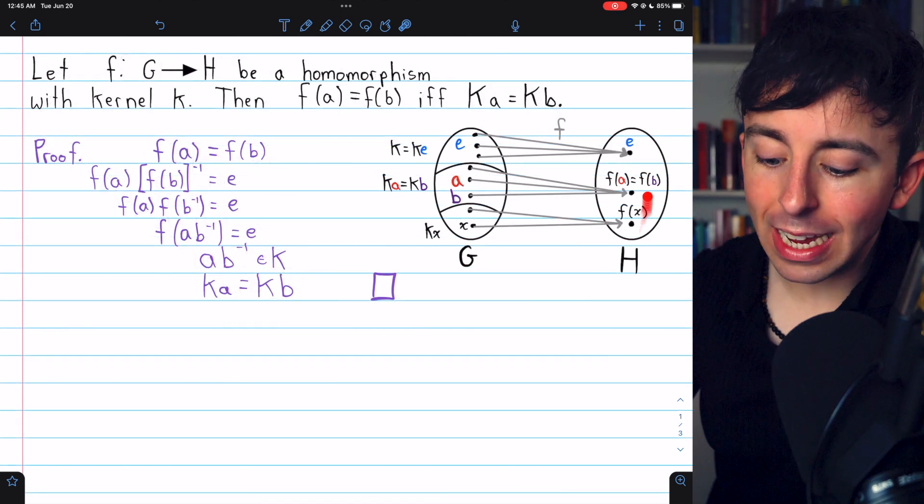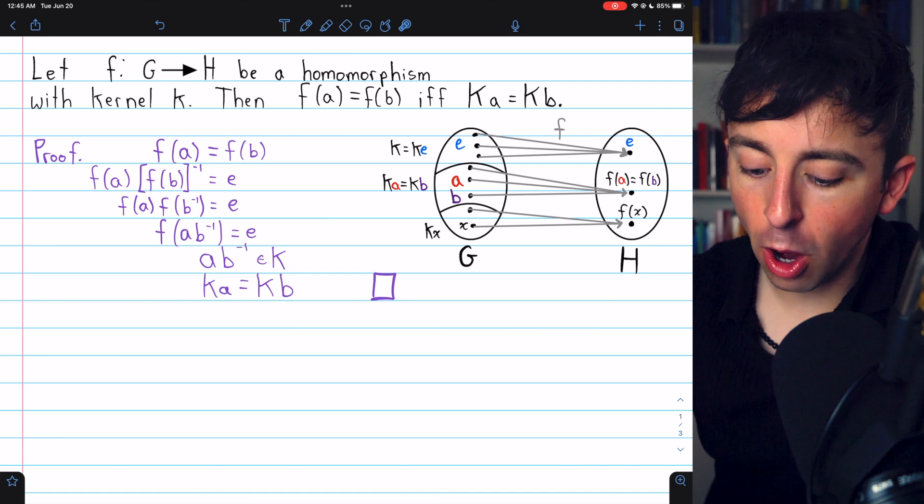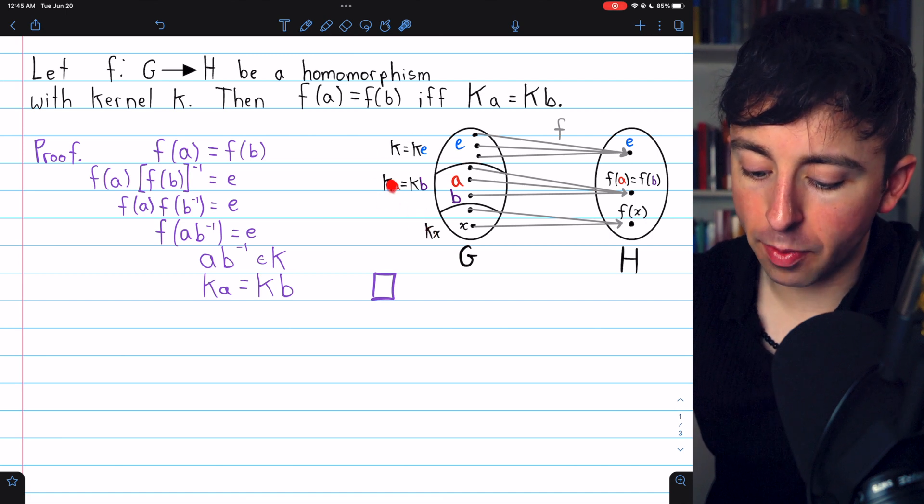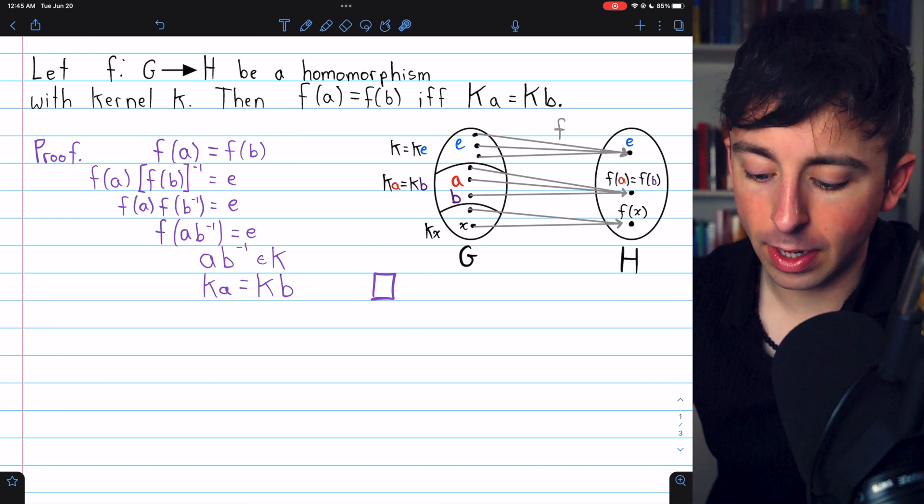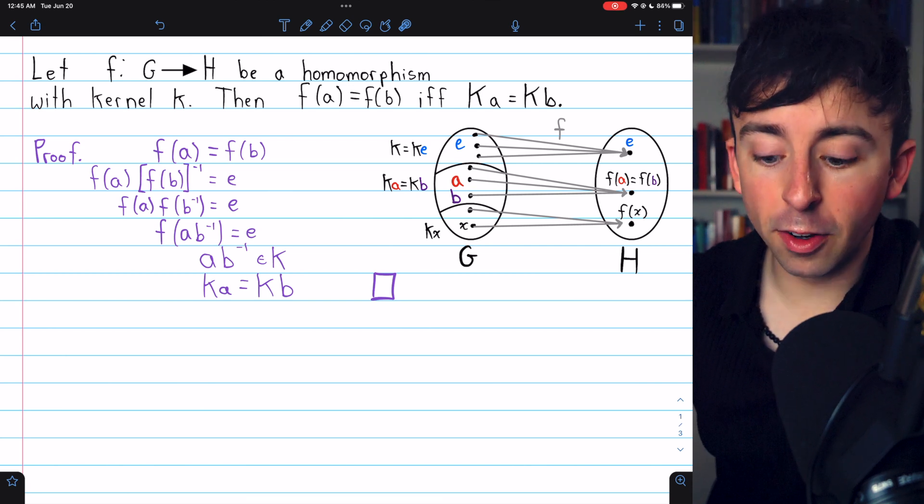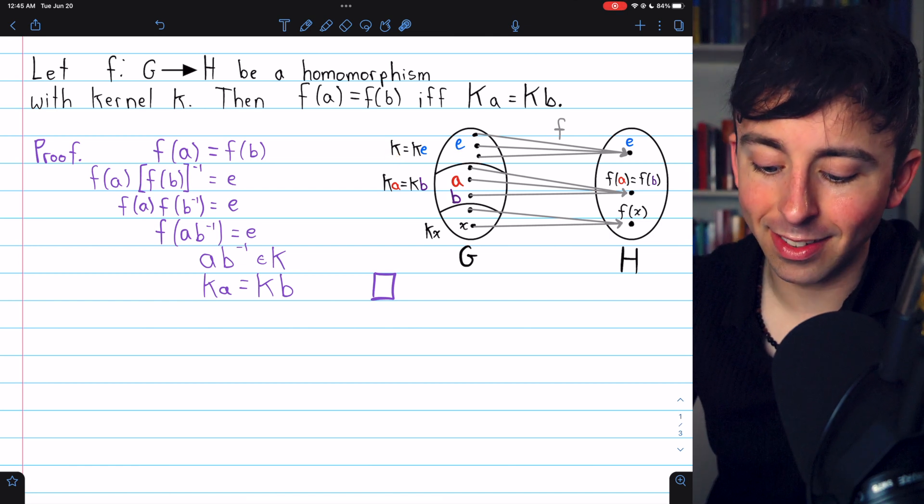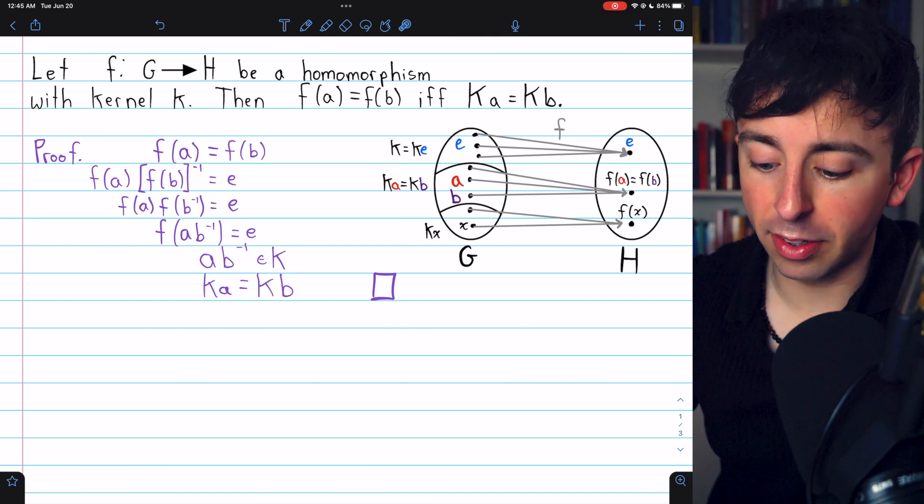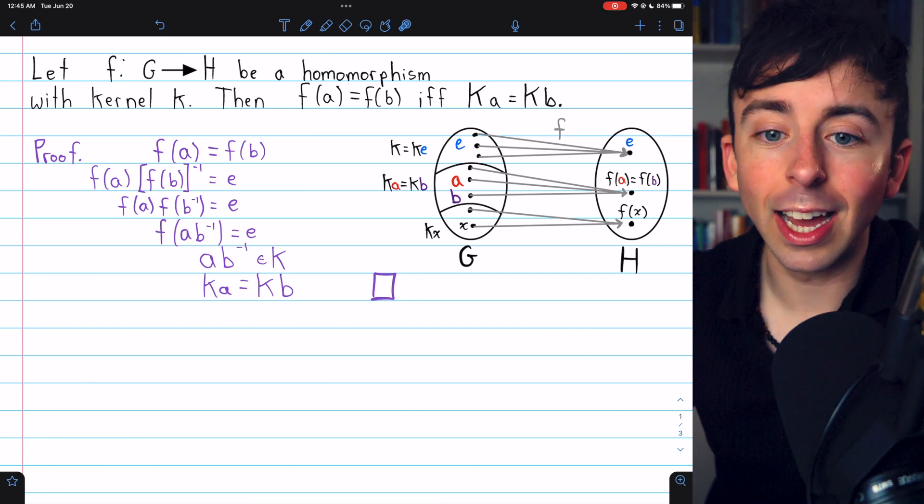Here is a diagram that helps illustrate this result. Here's our group G, and the cosets of the kernel of our homomorphism, of course, partition the group G into these different cosets. There's the coset Ke, which is just the kernel K, and of course contains the identity. We've previously proven that homomorphisms map the identity to the identity, which is why we have that.